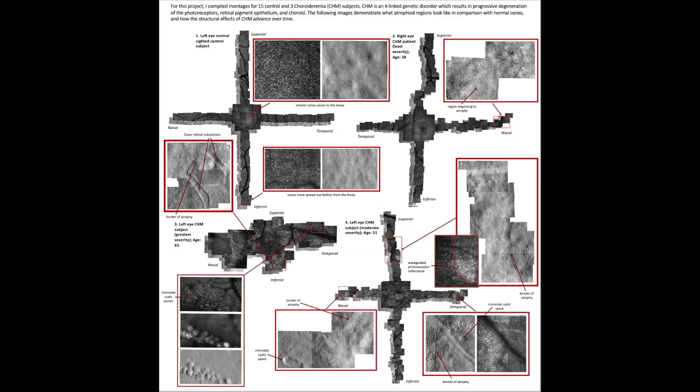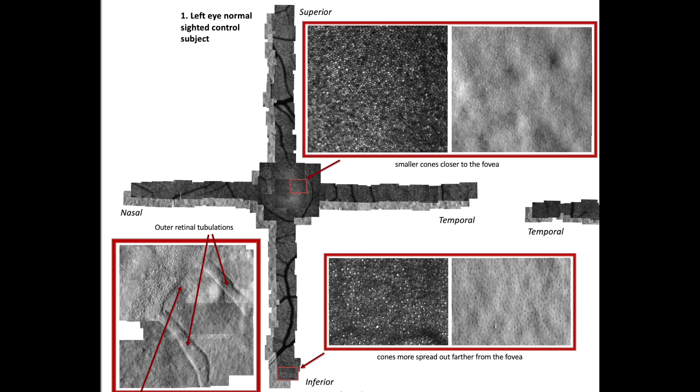Typical phenotypes of CHM include the presence of cysts, outer retinal tubulations, and atrophied regions, all of which are displayed in at least one of the three montages in the center here.